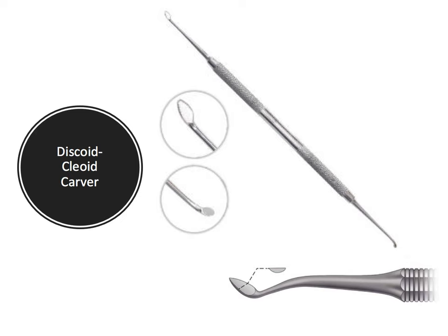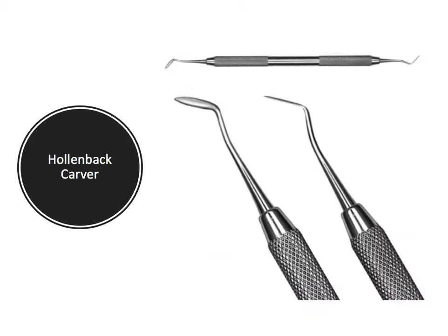The discoid cleoid carver is a double-ended instrument with a rounded handle used for carving and contouring amalgam. The cleoid end is the claw-like end for carving grooves into the amalgam, and the discoid end is the circular disc-like end for carving pits and fossae. The Holland back carver is a double-ended round-handle instrument used for placing, carving, and contouring amalgam, with the two ends oriented 90 degrees to one another.